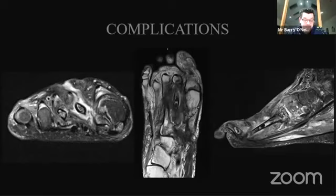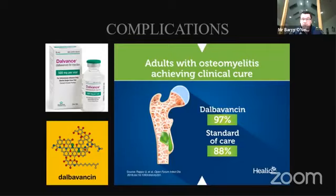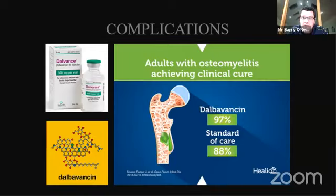An MRI scan demonstrated patchy oedema around the mid-foot and forefoot with osteomyelitis of the second, third, and fourth metatarsals. After several months of ongoing antibiotics and dressing changes, in January of this year — almost two years after the injury — we started dalbavancin. It's a second-generation lipoglycopeptide antibiotic, similar to vancomycin, with excellent soft tissue and bone penetration and effective against MRSA. It requires four divided doses each a week apart, administered as a day-ward infusion, and remains active at therapeutic levels for approximately 12 weeks. The patient's sinus closed within four weeks, and as yet he has had no further complications, though we are still in the early period.